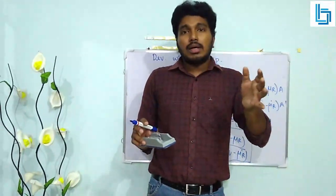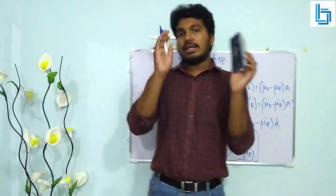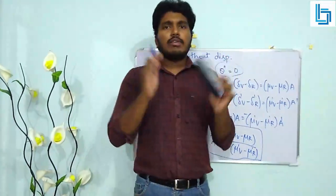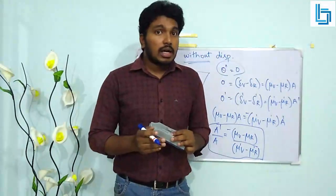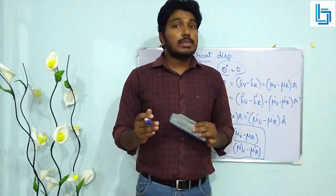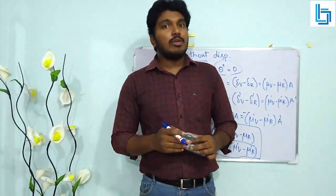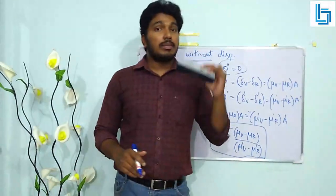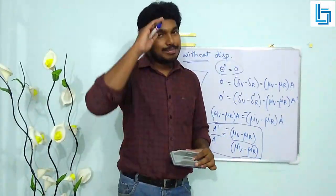So we have learned about prisms — the relationship between refractive index and minimum deviation, and the dispersion phenomena. I hope you understood the class. If you have any doubts regarding prisms, please comment below and subscribe to the channel if you liked the video. The next topic will be total internal reflection. Thank you.